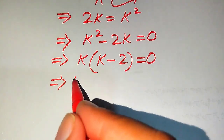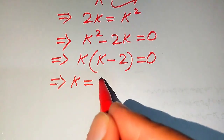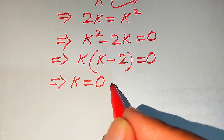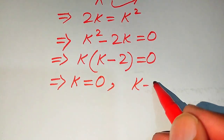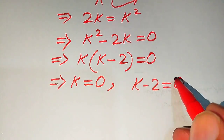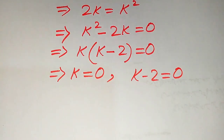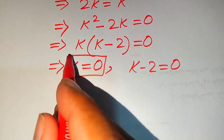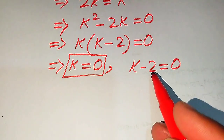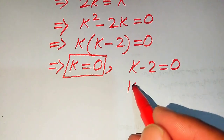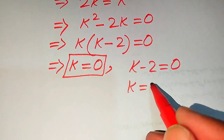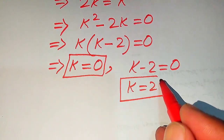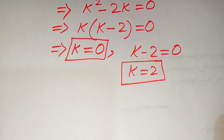Factoring gives us k equals 0 and k minus 2 equals 0. So k equals 0 is the first root. Moving minus 2 to the right-hand side gives k equals 2, which is the second root of the given equation. These are the two roots from the first method.